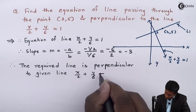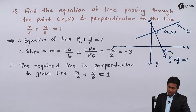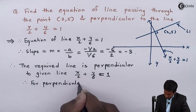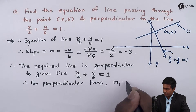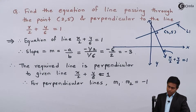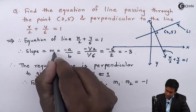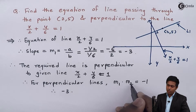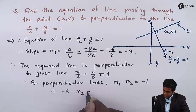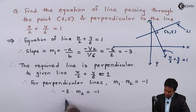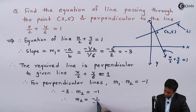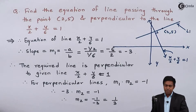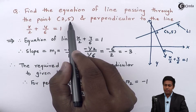Now let's find the slope of the required line. We know the property that for perpendicular lines, m1 × m2 = -1. The slope of the given line is m1 = -3. So (-3) × m2 = -1, which gives m2 = -1 / -3 = 1/3. The slope of the required line is 1/3.